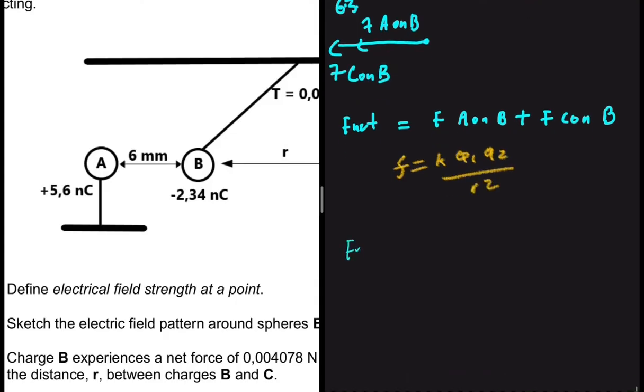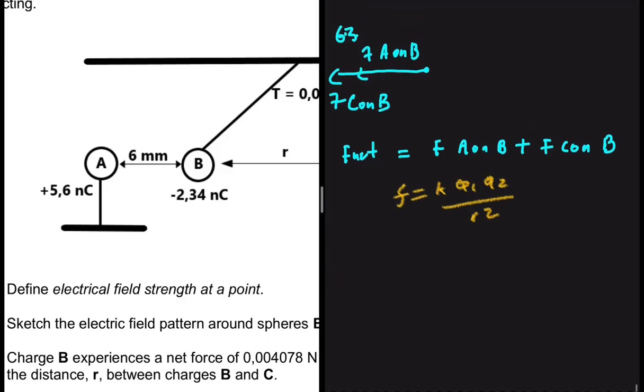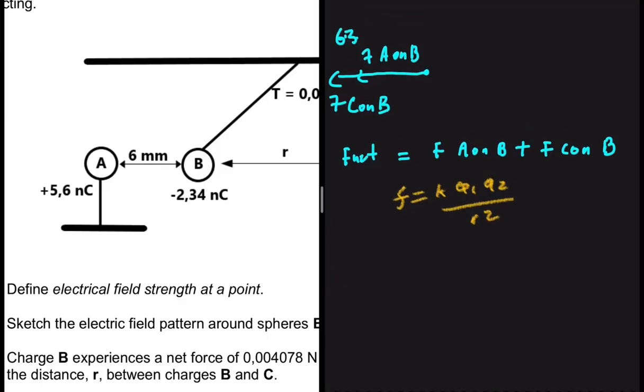Just a friendly reminder, F equals K Q1 Q2 divided by r squared. So F net equals, actually let me not say F net anymore because we know what F net is. F net is 0.004078 and that should equal F of A on B. So we're going to substitute in this formula. That will be K, K is the constant, 9 times 10 to the power 9.